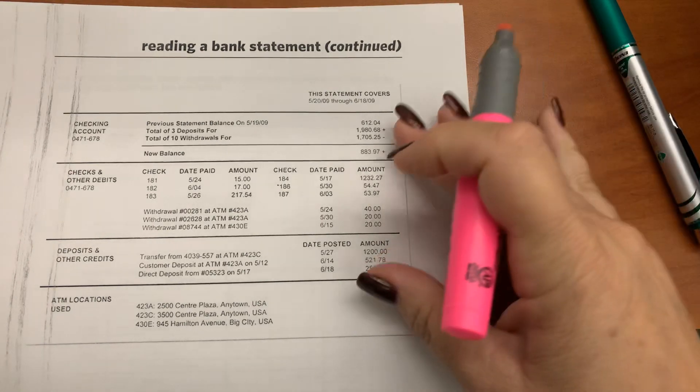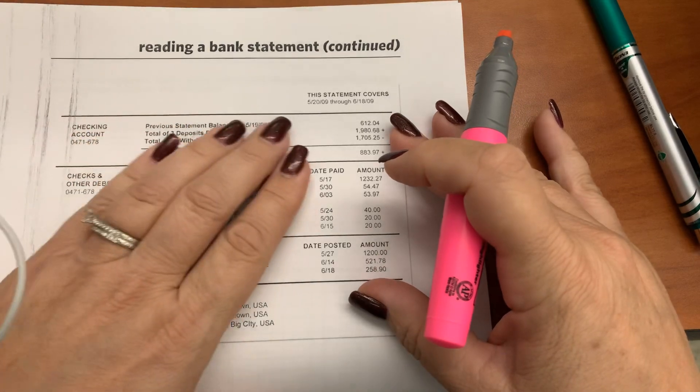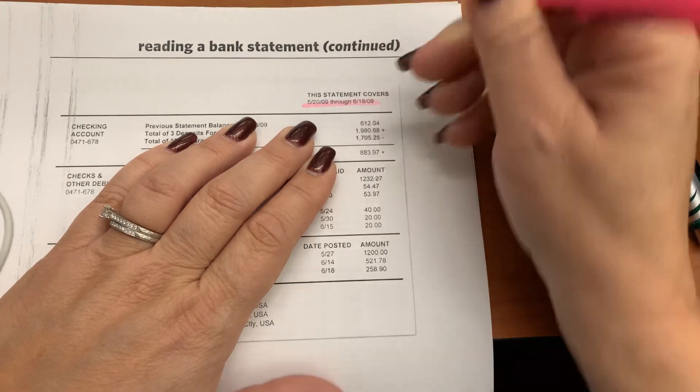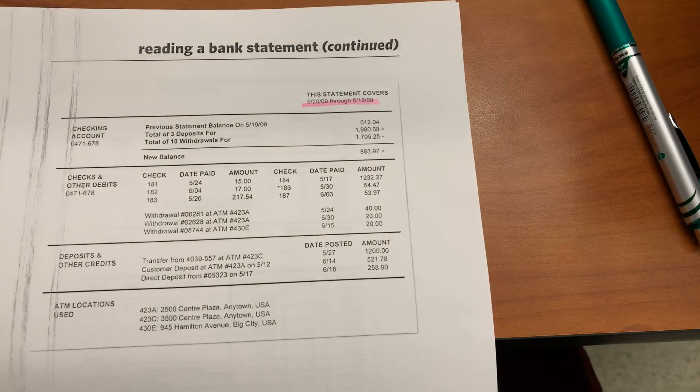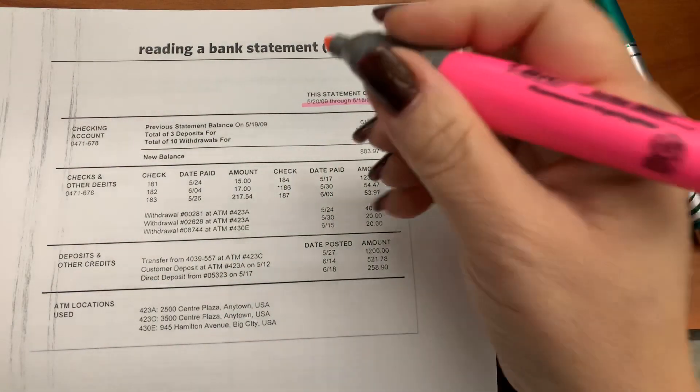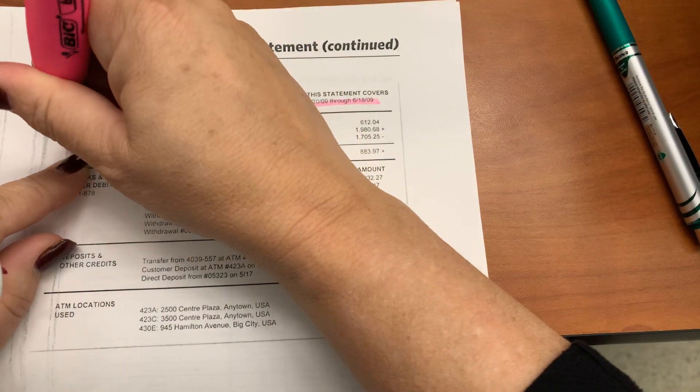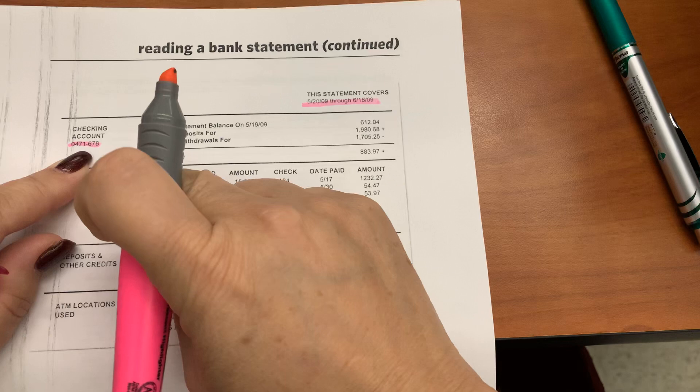So the period for the statement, which is question number one, is listed right here. It is 52009 through 61809. The account number for this statement is 047-678, which is listed under the account type.